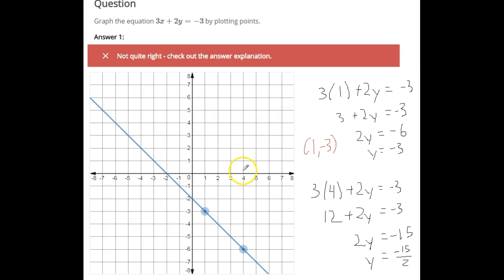So if we plug in 4, we get 3 times 4, which gives us 12. Subtract 12 from both sides, and you get negative 15 on the right. So now when you divide by 2, you get y is negative 15 over 2, which is negative 7.5. So this point should actually be down here at negative 7.5. And so that's not a very nice point to plot because it's a half instead of a whole number. So actually, let me try a different number besides 4.